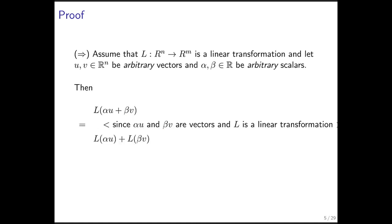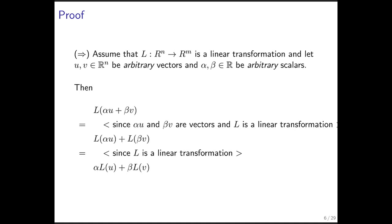We know that alpha·u and beta·v are themselves vectors. We know that if you add two vectors and then transform, you get the same result as if you first transform and then add — so we can conclude this step here, and we note the justification for that step. We also know L is a linear transformation, so if we scale first and then transform, we get the same result as transforming first and then scaling, and the same holds for beta times v.